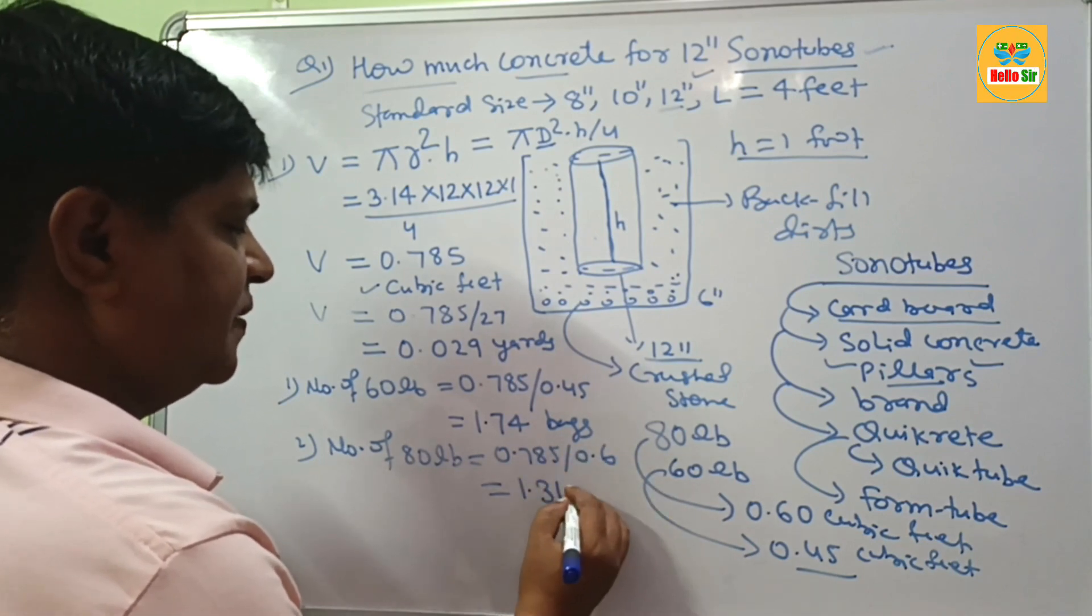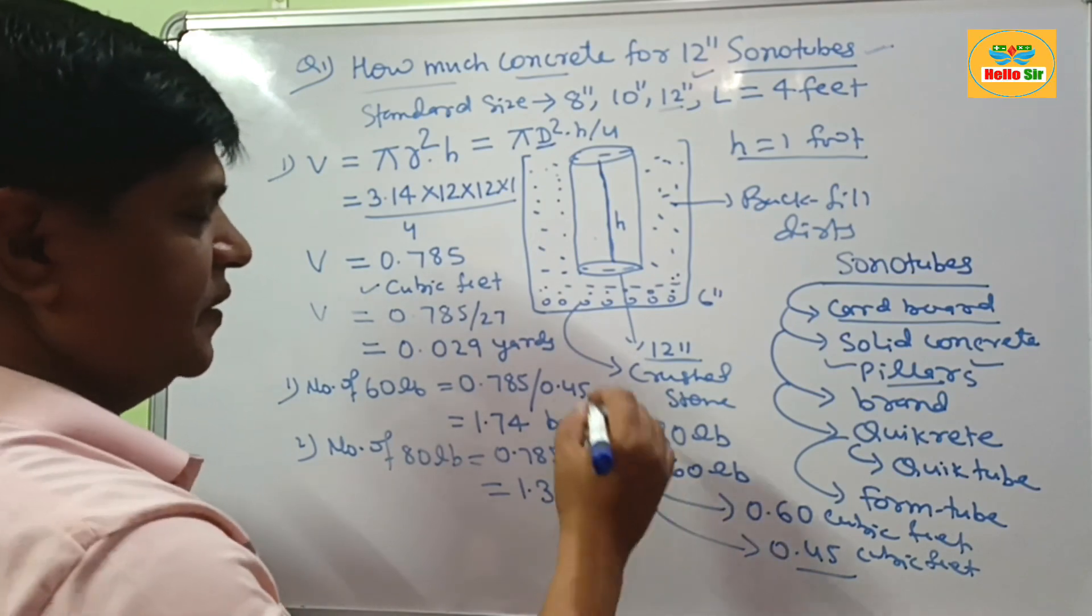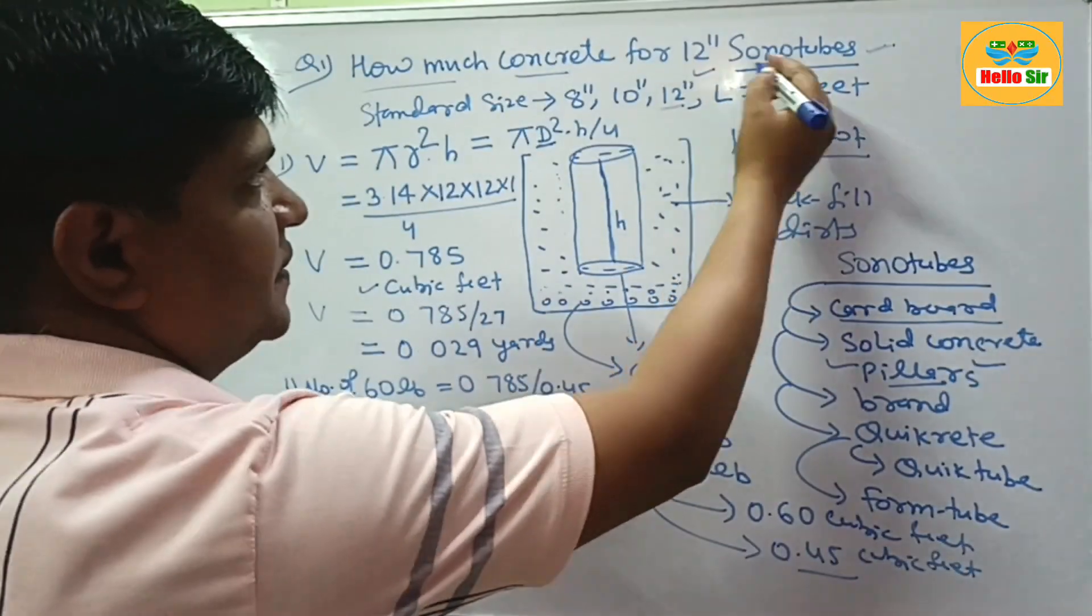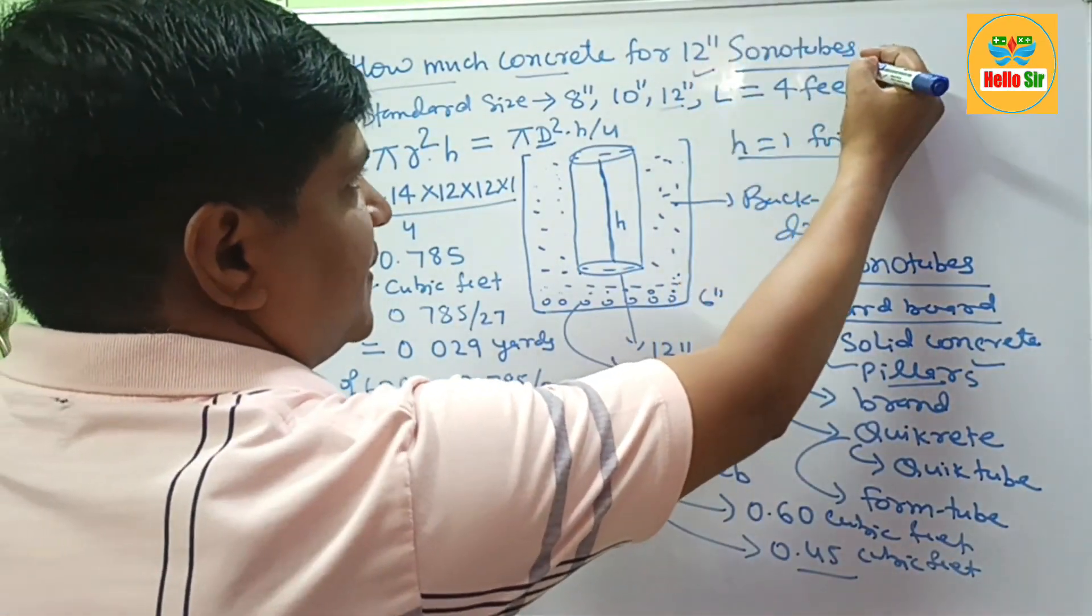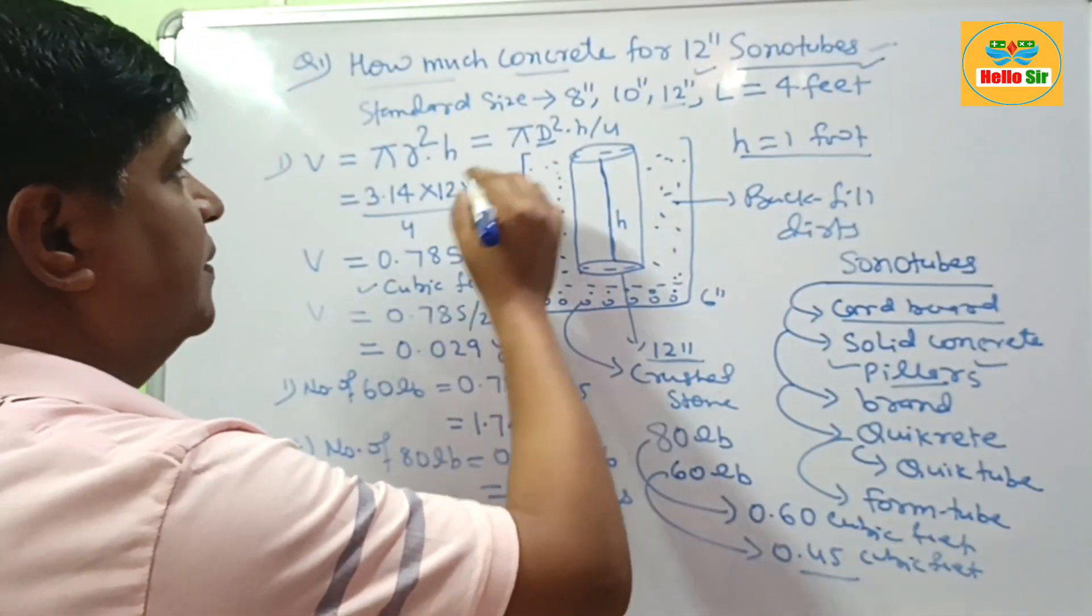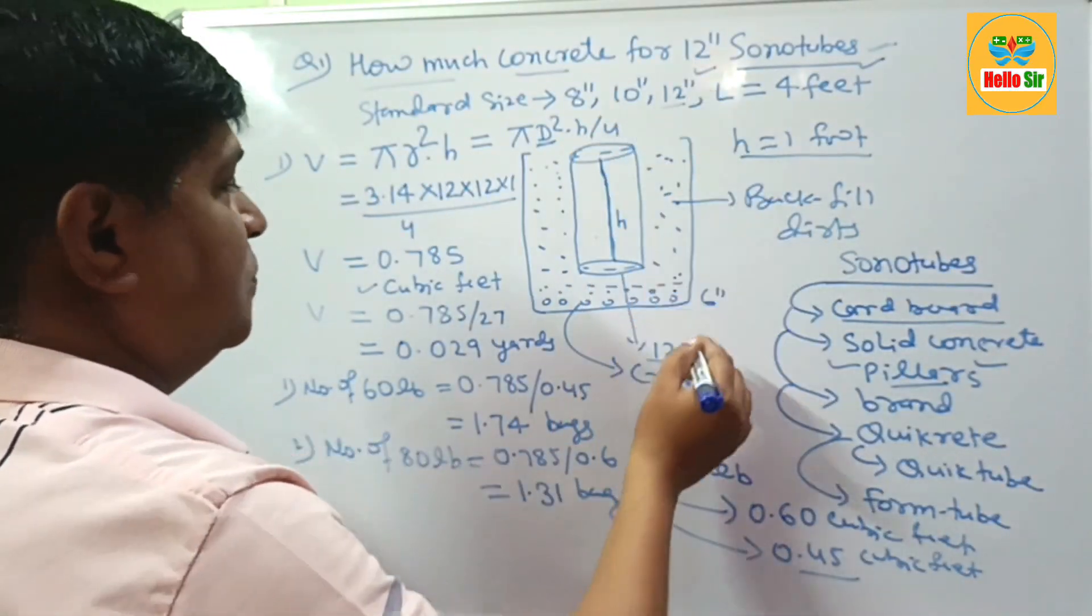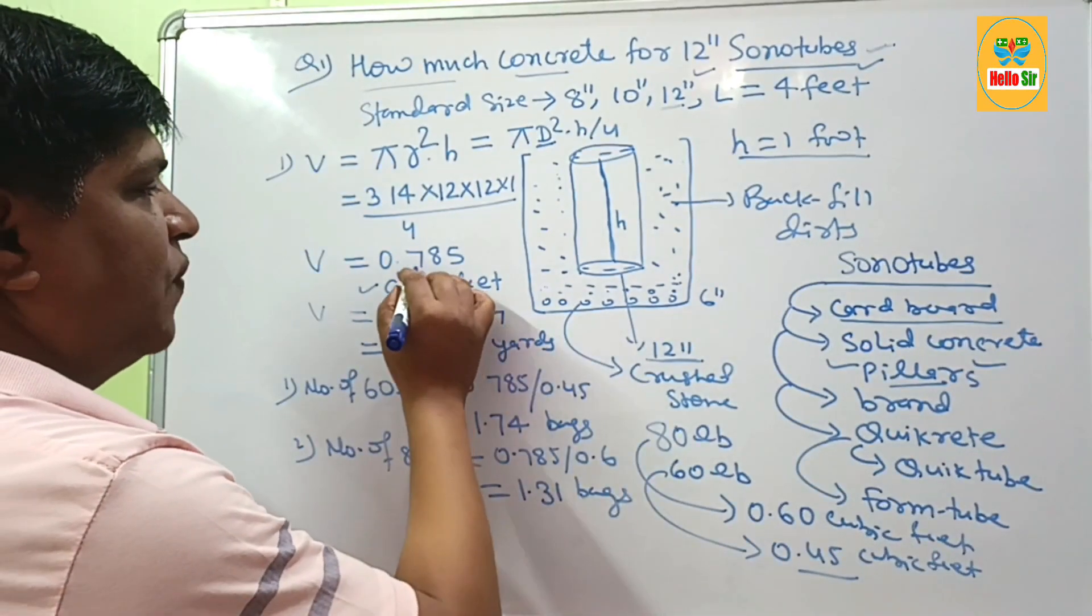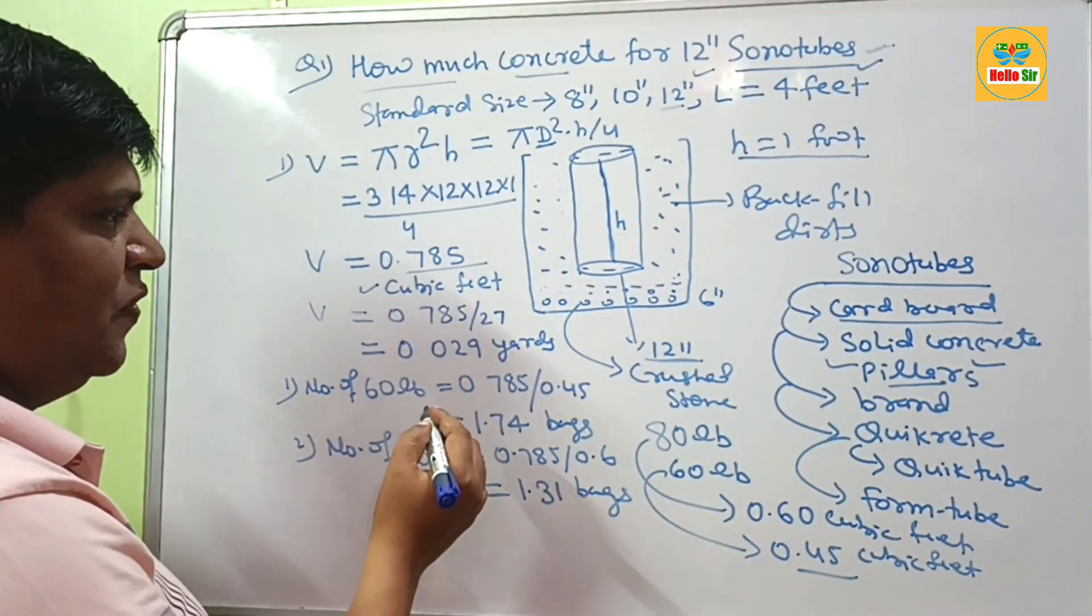This means how much concrete is required for 12-inch sonotubes. To fill this 12-inch diameter sonotubes, you may require 0.785 cubic feet of concrete.